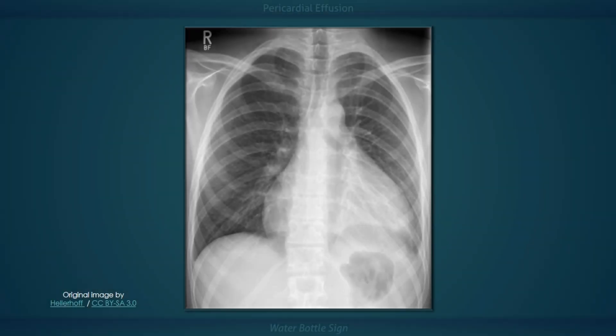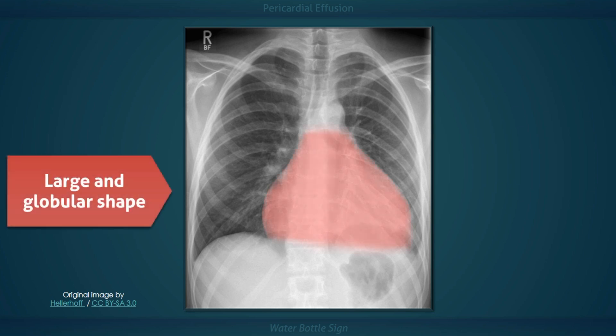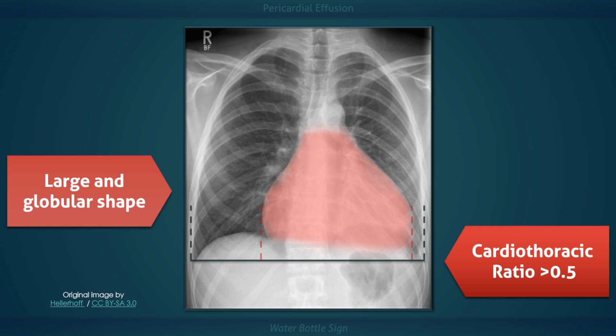While looking at this chest x-ray, the first thing that may come to your attention is the unusual appearance of the cardiac silhouette. It has a large and globular shape which apparently resembles an old-fashioned leather water bottle. The name is fitting since the pericardial sac is filled with fluid. More objectively, the cardiothoracic ratio in this image is approximately 0.6, which is larger than normal.